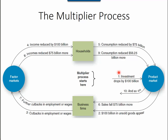Reducing investment directly affected the product market — investment fell, production was reduced, and sales decreased. With sales declining, businesses were directly impacted. In order to maintain profitability, the best thing for businesses to do was reduce employment and cut wages.